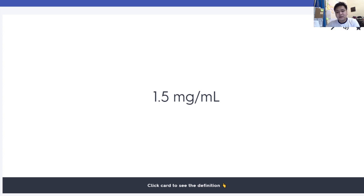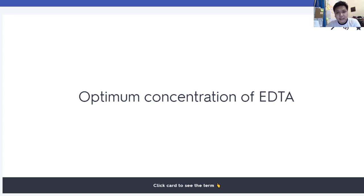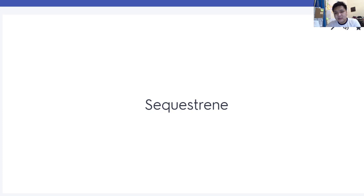1.5 mg per ml — this is the optimum concentration of EDTA. Versenate is the disodium salt of EDTA. Versenate tri-potassium salt of EDTA.